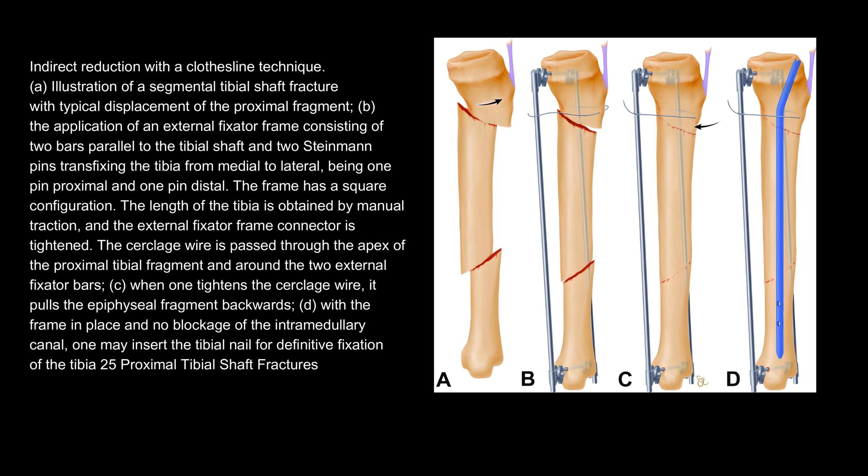Indirect reduction with the clothesline technique. (A) Illustration of a segmental tibial shaft fracture with typical displacement of the proximal fragment. (B) Application of an external fixator frame consisting of two bars parallel to the tibial shaft and two Steinmann pins transfixing the tibia from medial to lateral, one proximal and one distal. The frame has a square configuration. Length of the tibia is obtained by manual traction, and the external fixator frame connector is tightened. The cerclage wire is passed through the apex of the proximal tibial fragment and around the two external fixator bars. (C) When the cerclage wire is tightened, it pulls the epiphyseal fragment backwards. (D) With the frame in place and no blockage of the intramedullary canal, one may insert the tibial nail for definitive fixation.